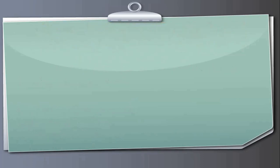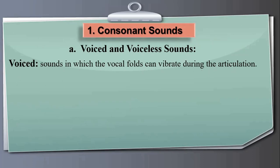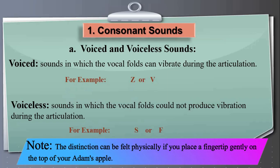Consonant sounds are always divided into voiced and voiceless sounds. Voiced sounds are those in which the vocal folds vibrate during articulation — for example, the sounds Z, R, and V. Voiceless sounds are those in which the vocal folds do not produce vibration — for example, S, F. This distinction can be felt physically by placing a fingertip gently on your Adam's apple.